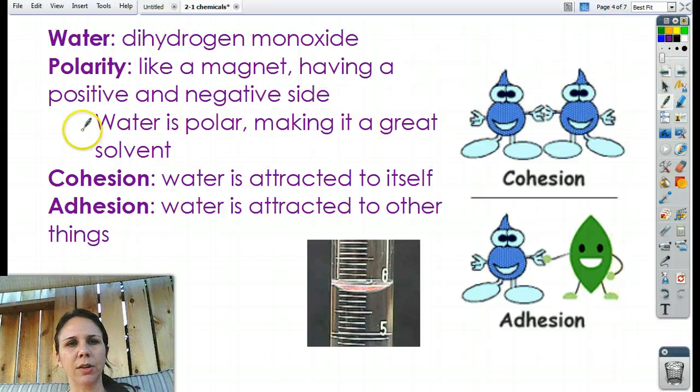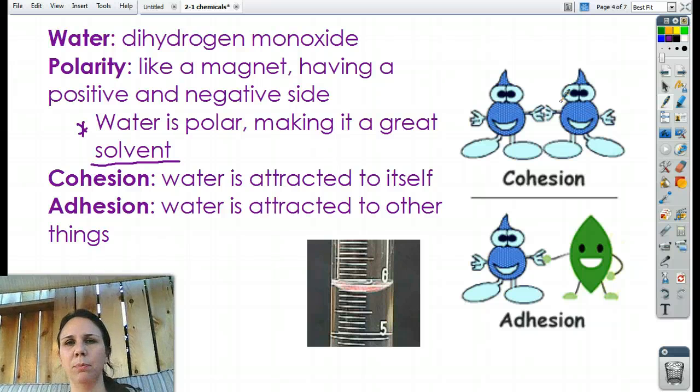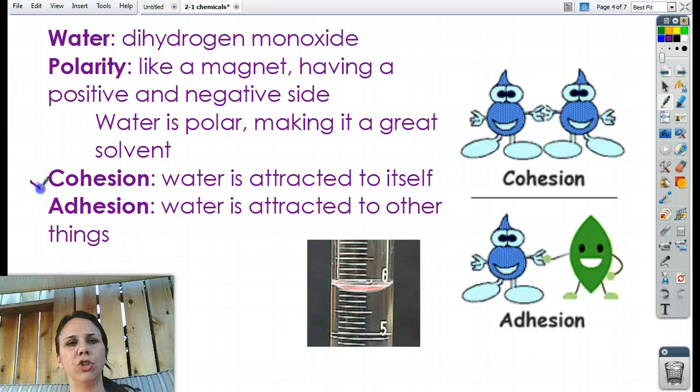Well, okay, and that's what makes water so cool as what's called a solvent. So, solvent is something that can dissolve something else. And so, we know we can put pretty much anything in water, except for oils, and it will dissolve. Well, water is also very sticky to itself, like we said. We call that cohesion.